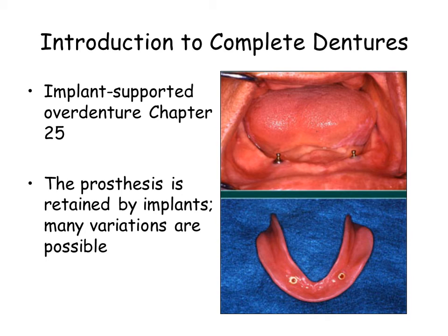The implant-supported overdenture is a prosthesis retained by implants. Many variations are possible in the number and arrangement of the implants. Disadvantages of this approach are the additional surgical intervention and expense incurred, plus a serious risk of ignoring the merits of traditional treatment modalities in the management of extensive partial edentulism.